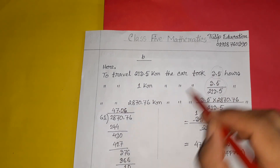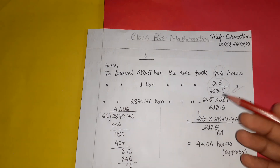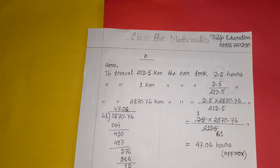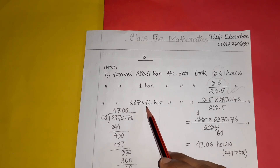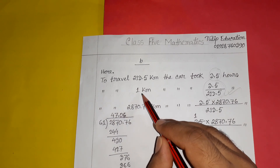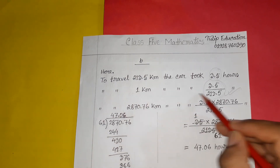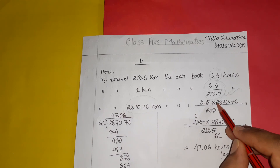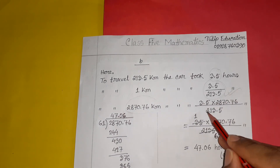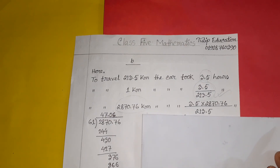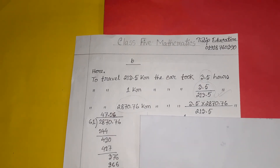The unitary method is the more standard and easier way to write this. We write it step by step. If 1 kilometer takes a certain time, then for more kilometers we multiply accordingly. For 1 kilometer the time is 3.5 divided by 213.5 hours. This is a decimal fraction problem, so we apply the decimal fraction method.